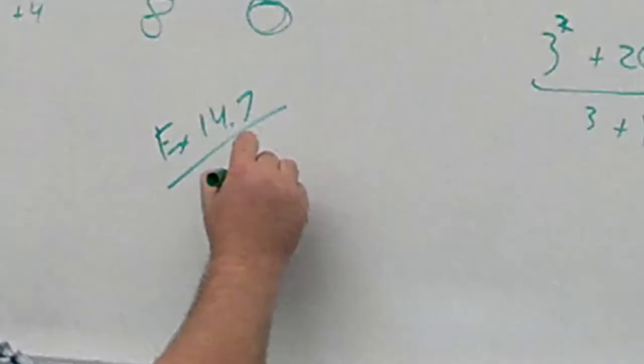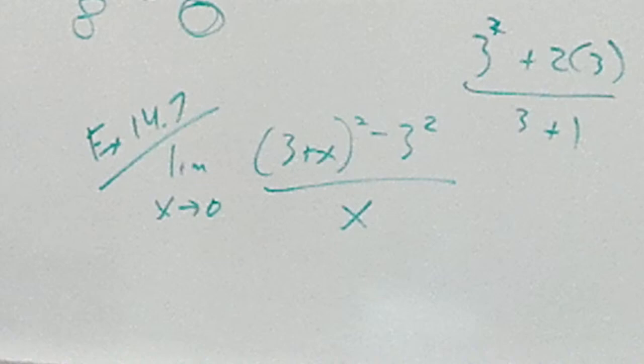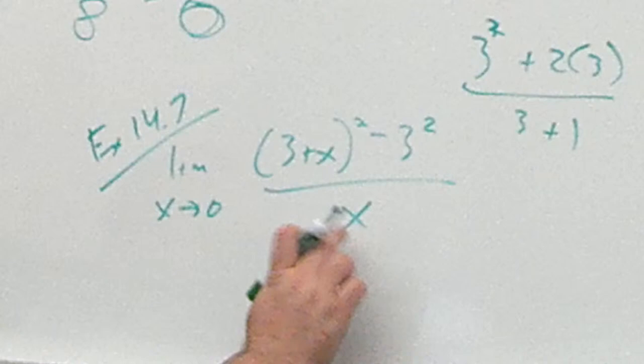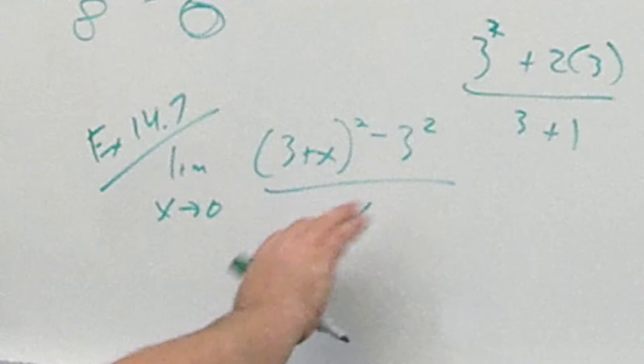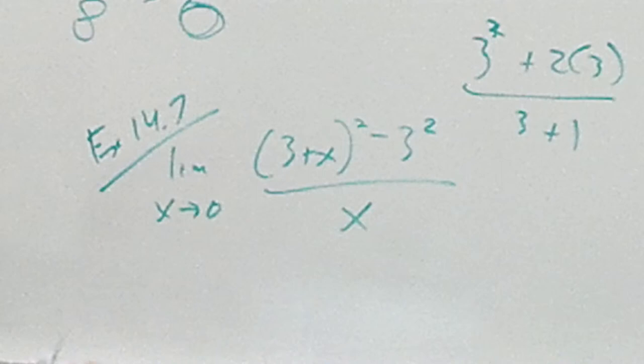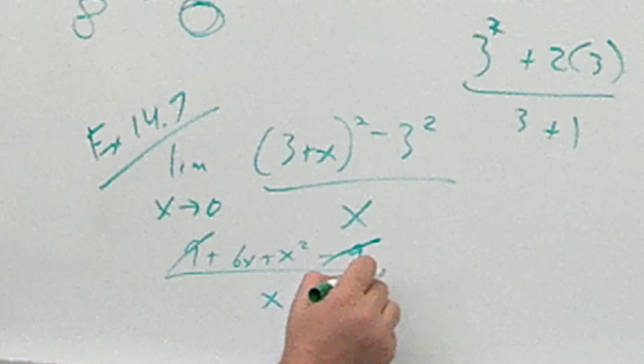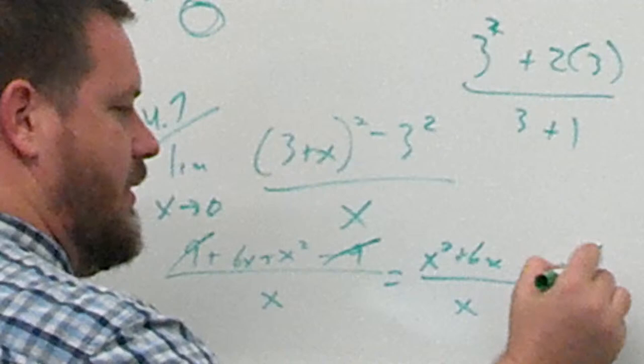14.7. The limit as x approaches 0 of (3 plus x) squared minus 3 squared all over x. Can I just plug in this number for this variable and do it? No, I can't because I have that on the bottom. Let's try expanding that and see if we end up canceling the x. 3 plus x squared is going to be 9 plus 6x plus x squared minus 3 squared is 9, over x. 9 minus 9 cancels. And we've got x squared plus 6x over x. This factors to x times (x plus 6) over x. Cancel. Now we have x plus 6. Now we can go ahead and plug in the 0 for the x and we get 6.